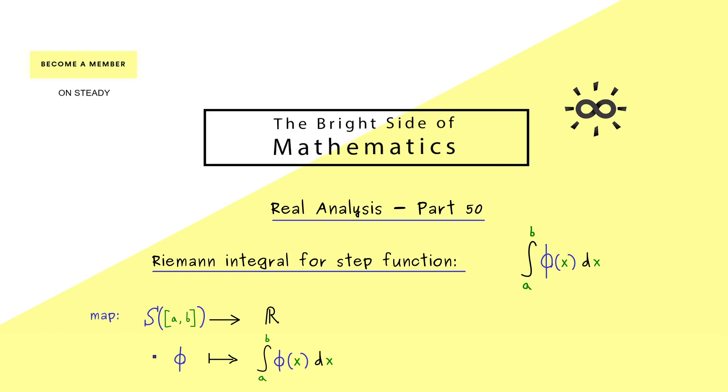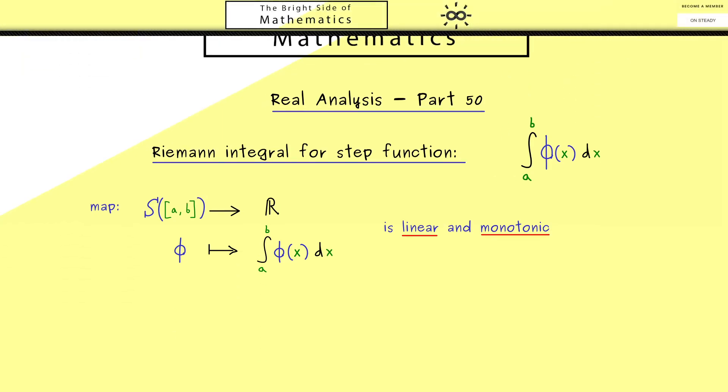Now this map has some nice properties we can immediately prove by using the definition of the integral. Indeed, to summarize these properties I can immediately tell you this map is a linear map and it's also monotonic.